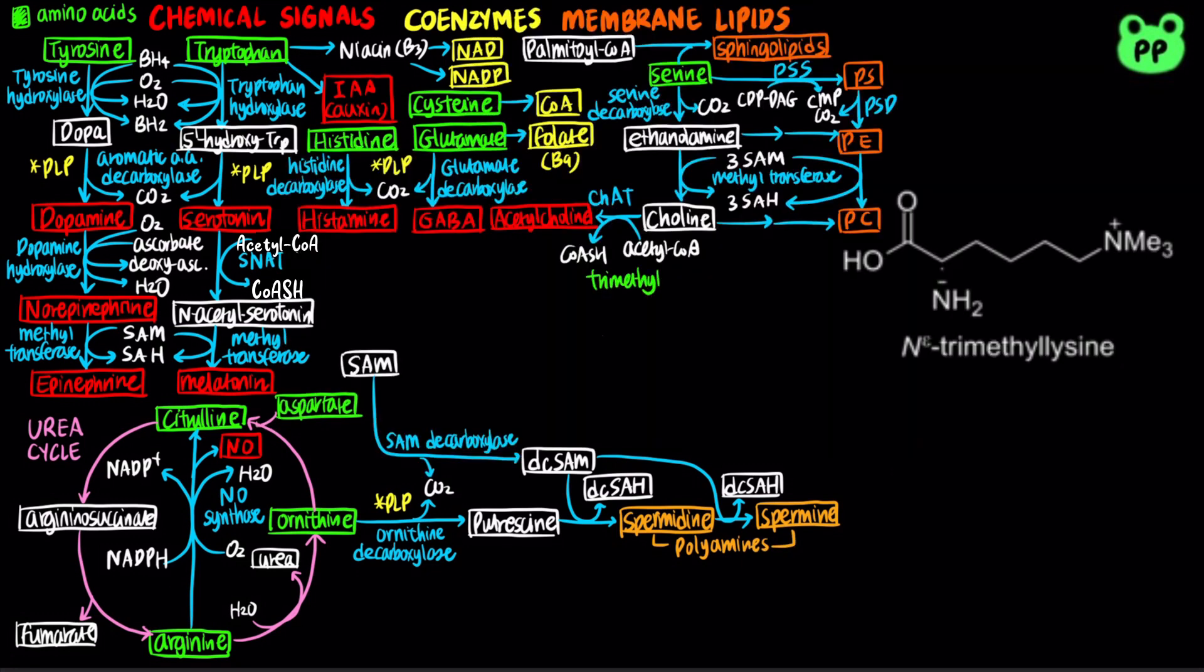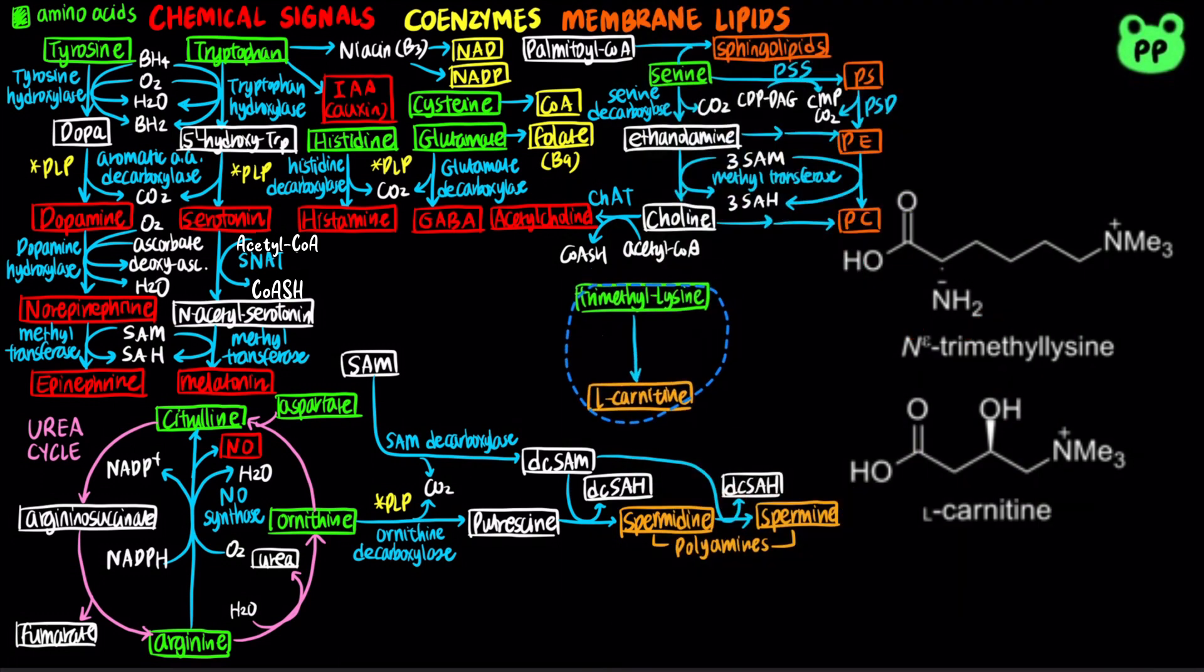Trimethyllysine can give rise to carnitine in a series of steps. Carnitine is important in transporting fatty acyl-CoA from the cytosol into the mitochondrial matrix for fatty acid oxidation.